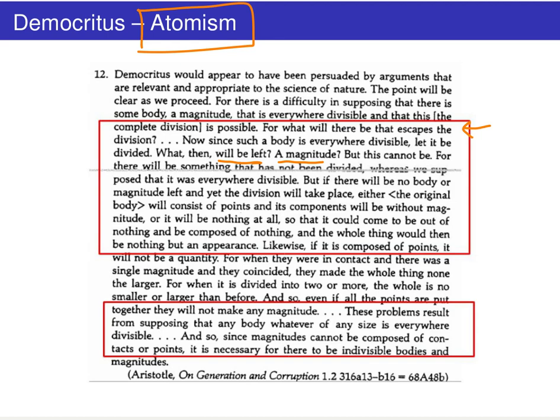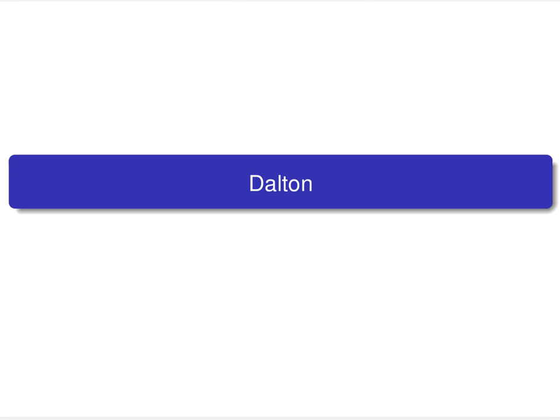Our next stop on our tour of atomic history is the work of Dalton, one of the first scientists as we think of them today, who put together experiments that allowed us to really tease out the experimental evidence for the existence of atoms.